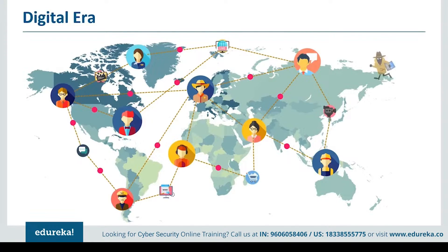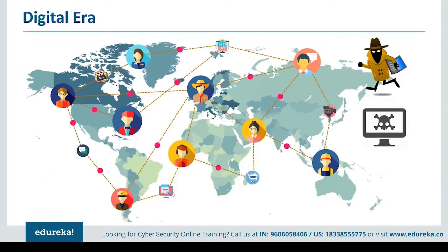Cyber criminals are in the business of stealing sensitive data like contact numbers, credit card information, and bank account details that they sell to third parties for profit. There are also malicious hackers with personal enmity hacking into systems to expose host vulnerabilities, and hacktivists inspired by political and social activism who hack systems opposed to their ideology.